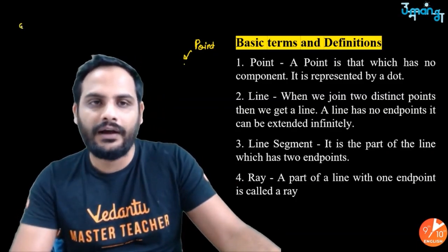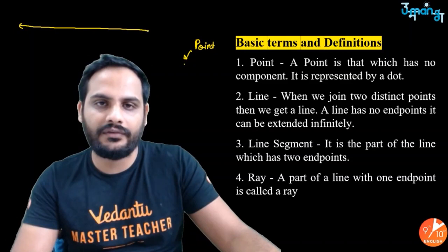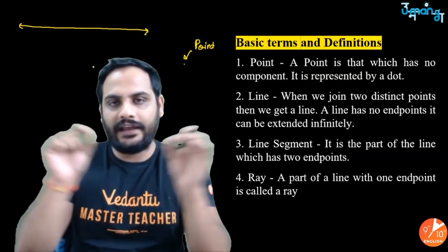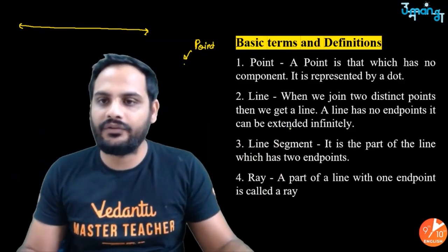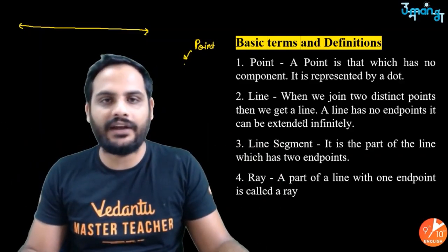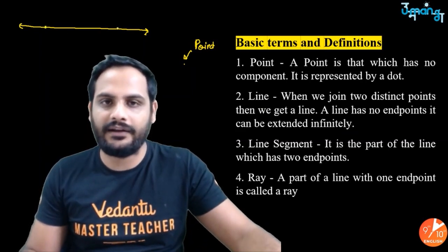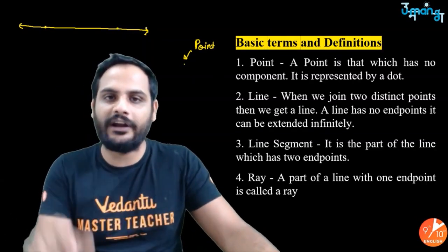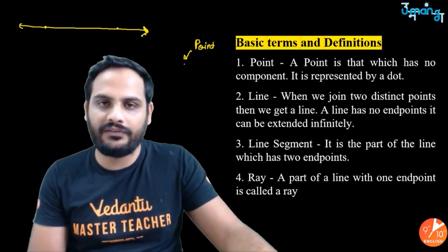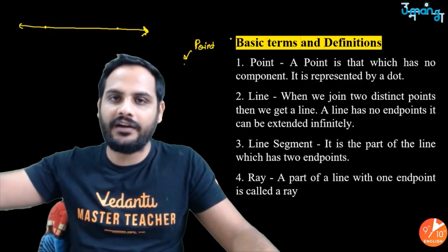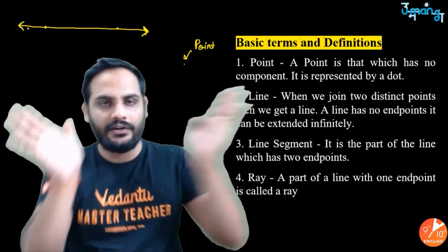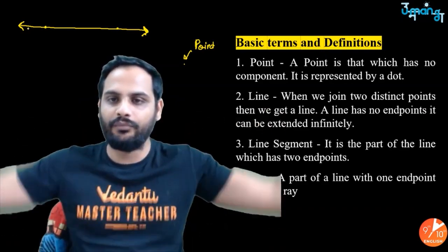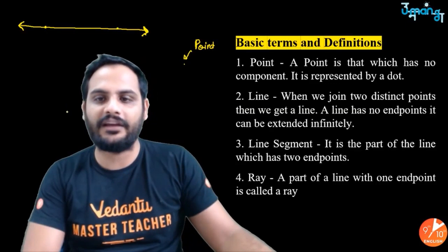What is a line? A line is extended on both sides indefinitely. When we join two distinct points we get a line. Remember, a line does not have any endpoints — the arrows mean it can be extended further on both sides.